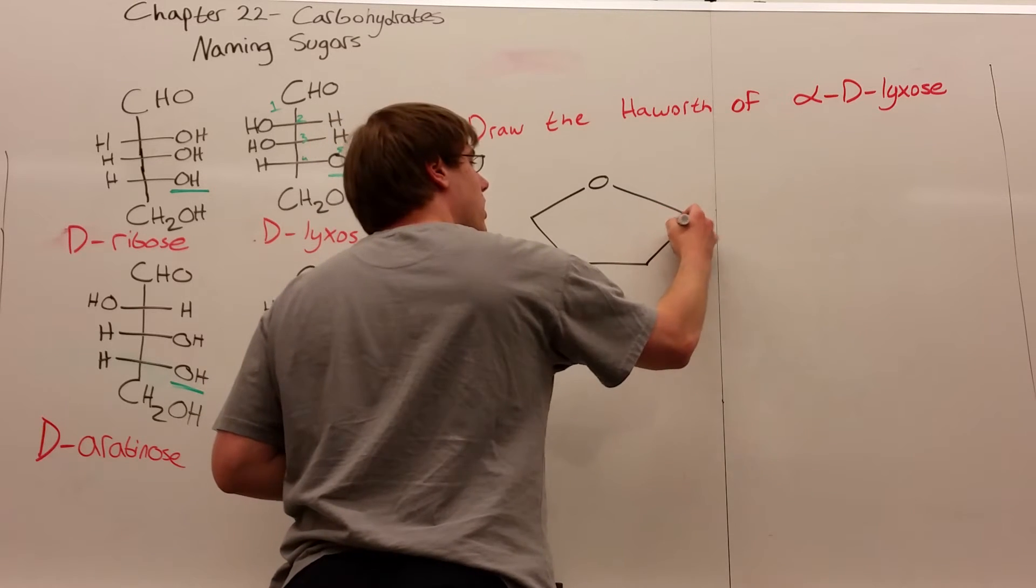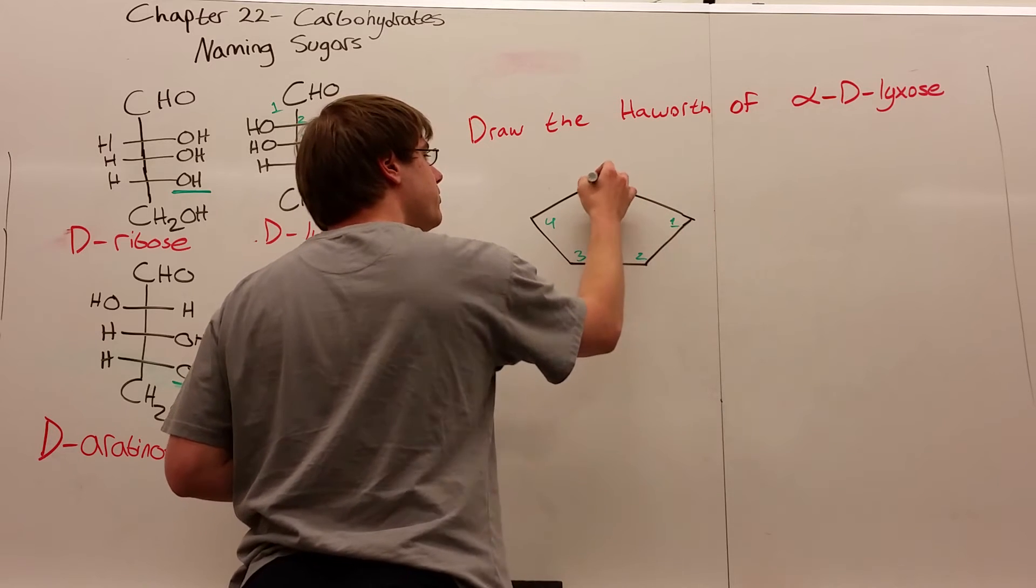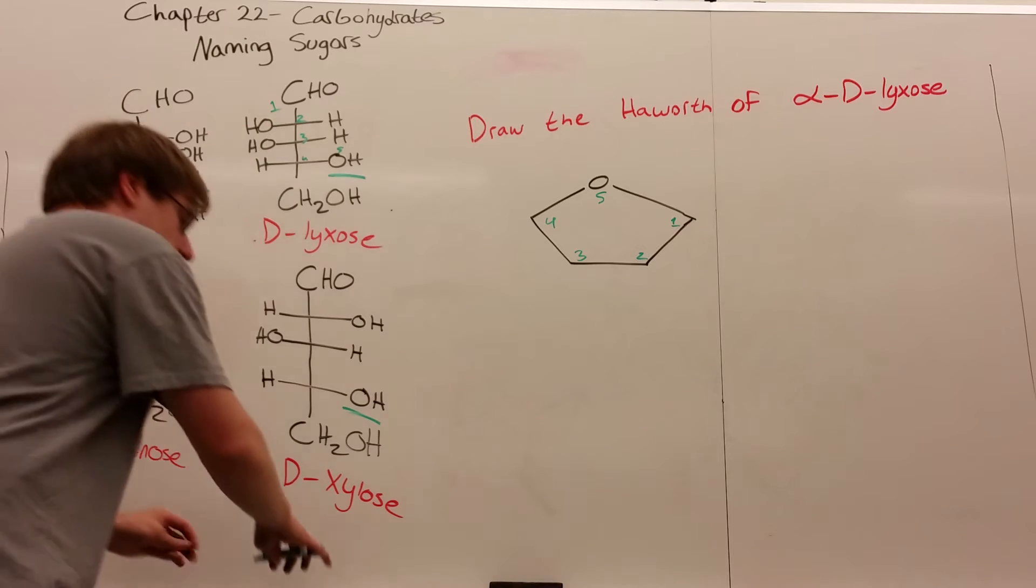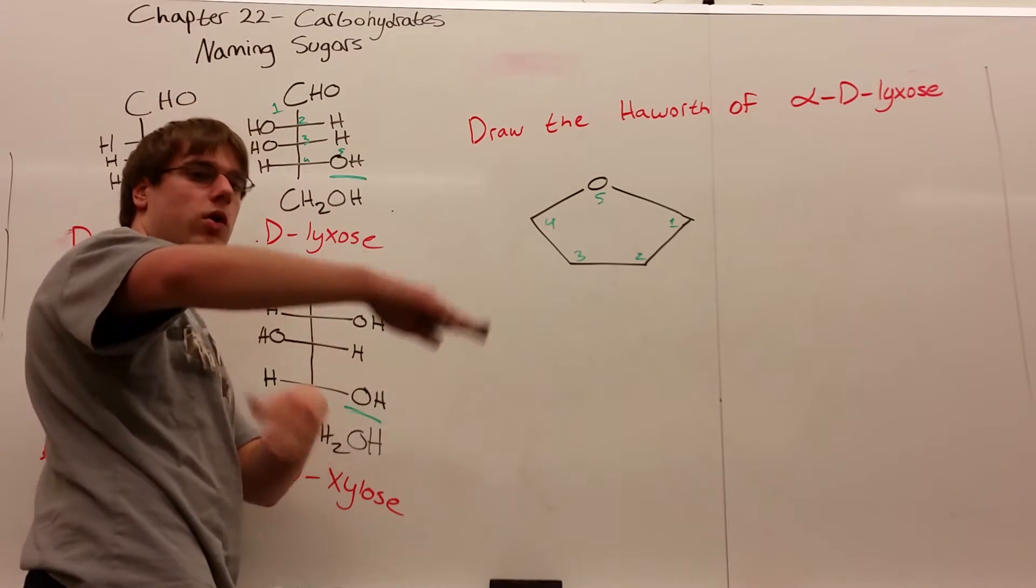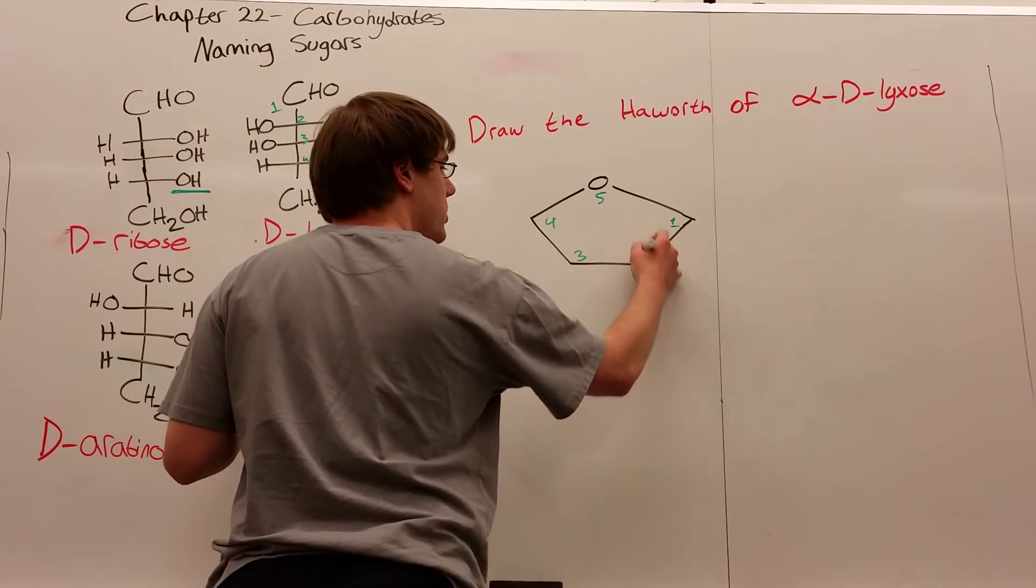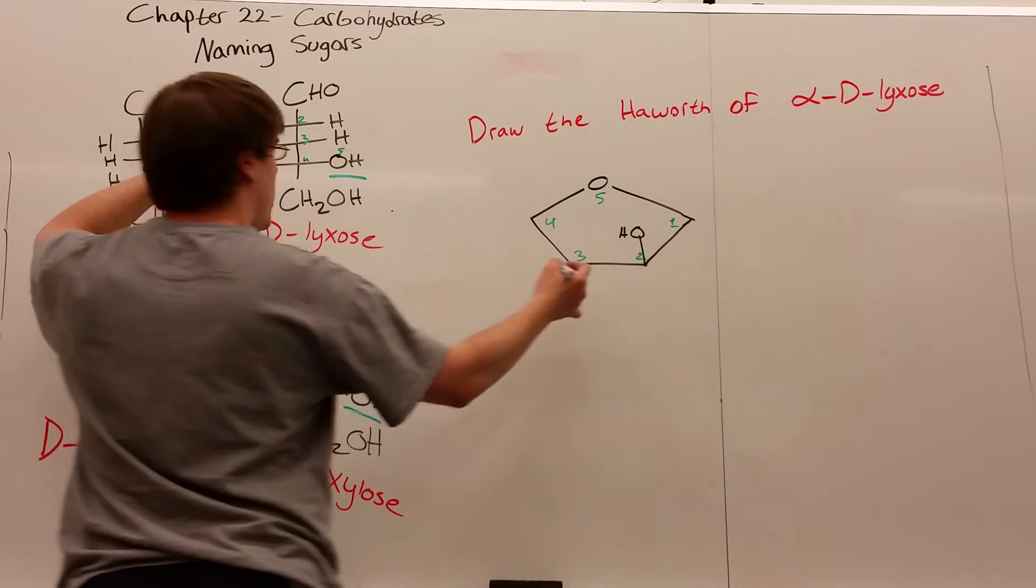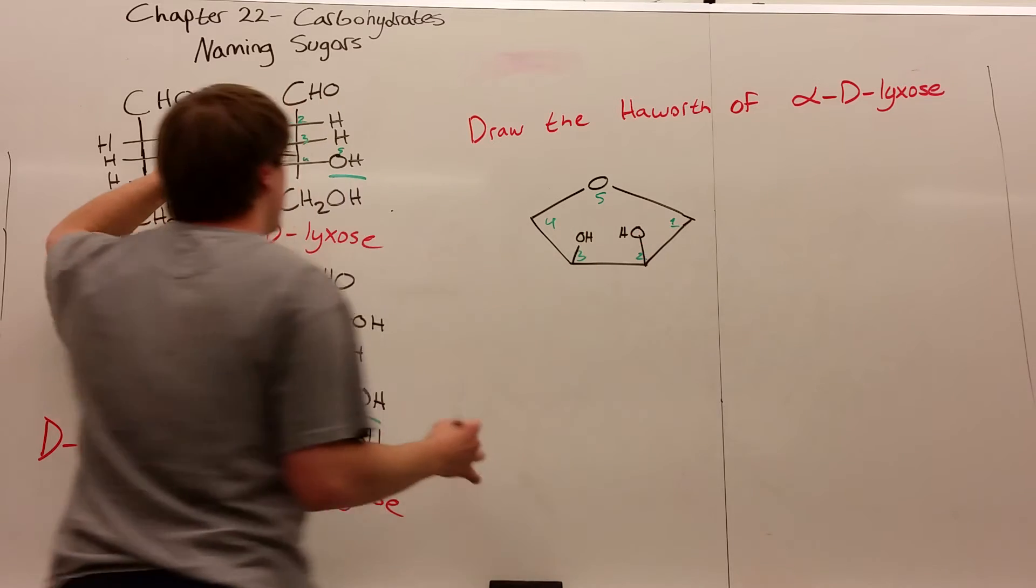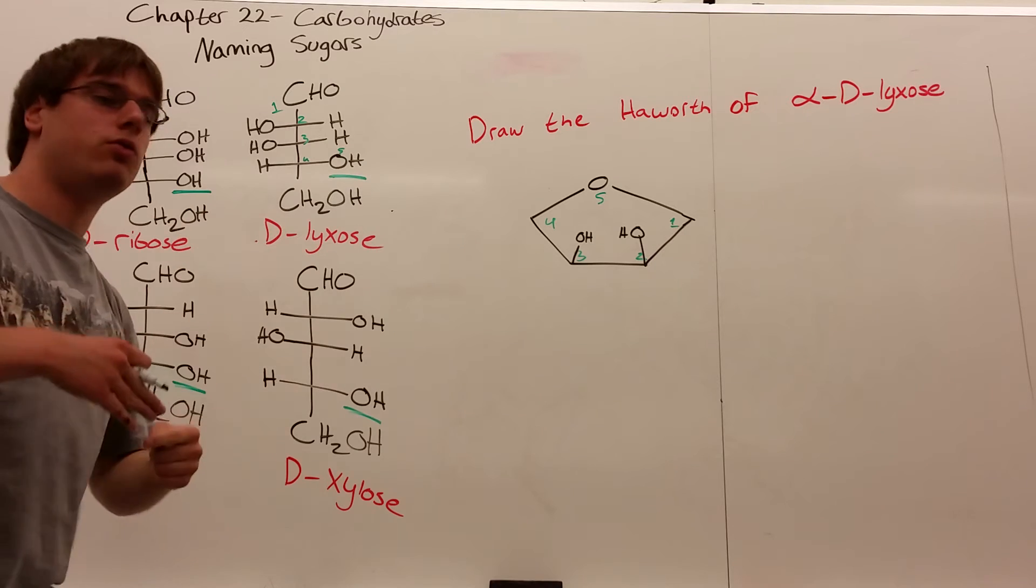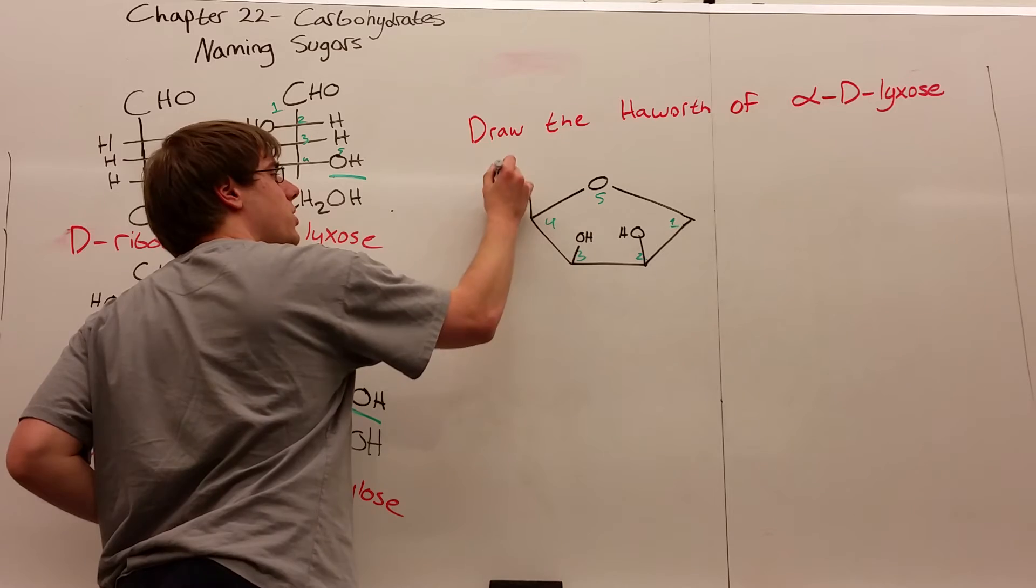Let's number our carbons and work on carbons two, three, and four's stereochemistry. Carbon two has the OH on the left, which means it points up in the Haworth. The second OH is also on the left, so that also points up. Carbon four is the penultimate carbon, which means the OH follows the opposite rule—if the OH is on the right, the CH2OH points up in the Haworth.